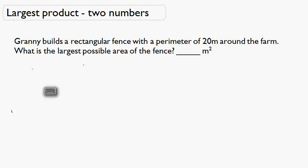Granny builds a rectangular fence with a perimeter of 20 meters around the farm. We're going to figure out what is the largest possible area of the fence.